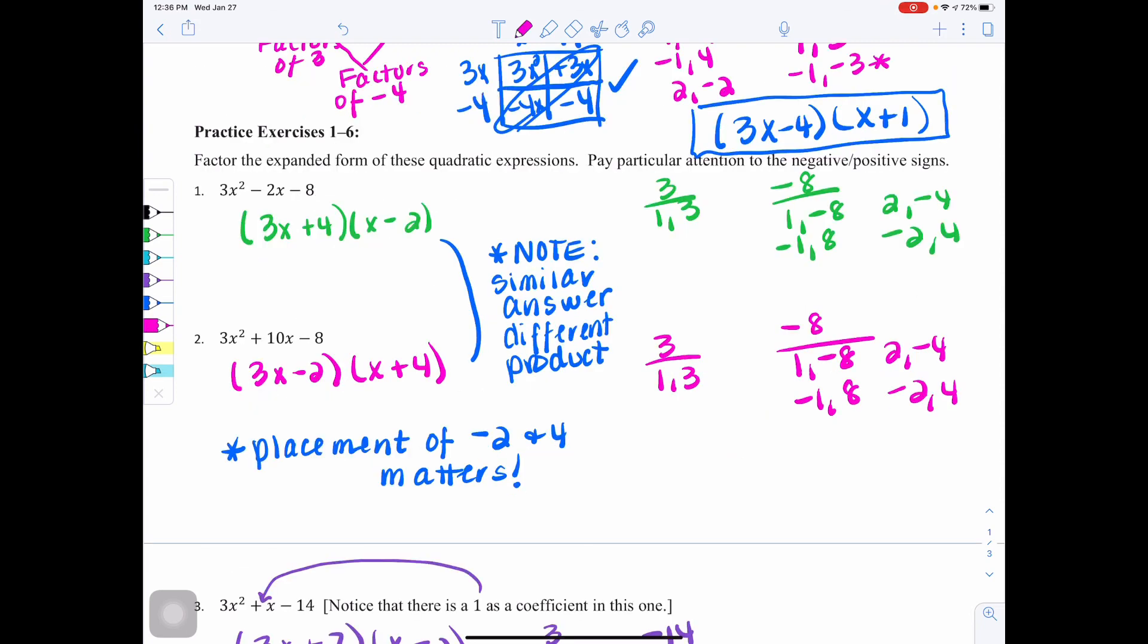Okay, now that you've had time to practice the problems, here are the answers. If at any point you need to pause the video to copy or fix your notes, please do so. In number 1, and in all of them, you're always going to list the factor pairs of the a value and the factor pairs of the c value. So in number 1, you should get 3x plus 4 times x minus 2.